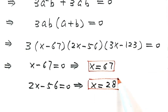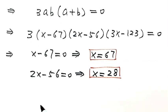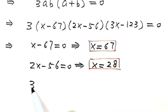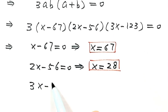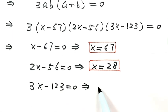Now let's set the third factor equal to zero. Then 3x minus 123 equals zero. Solve for x. Then x equals 41.